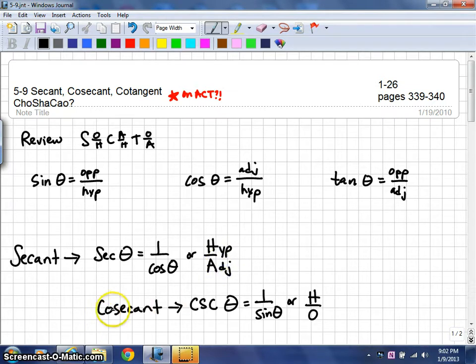Similarly, for cosecant, you abbreviate it as CSC of an angle, and that represents the reciprocal of sine. Or, if you're working with the right triangle, you can do the hypotenuse over the opposite.